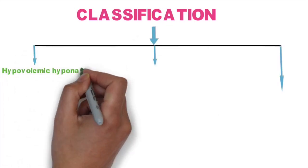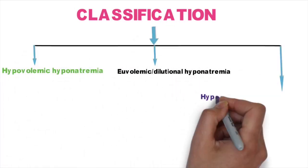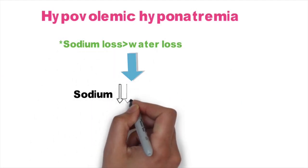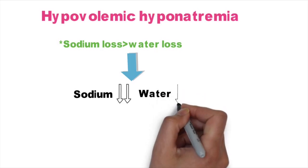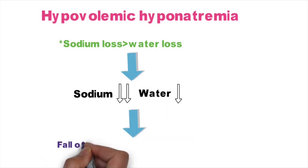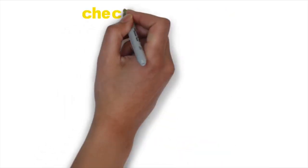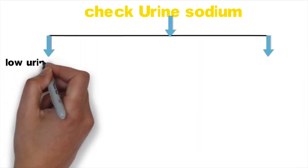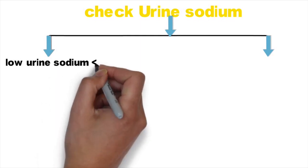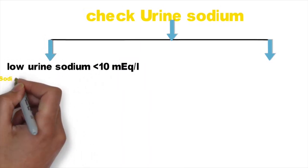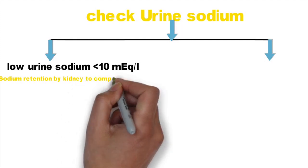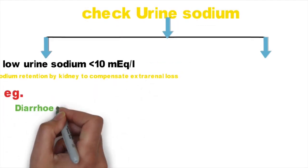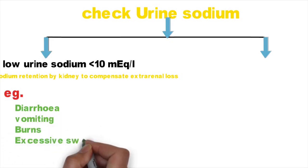Classification: Hypovolemic hyponatremia. In hypovolemic hyponatremia, both sodium and water are lost from the body, but sodium loss is more than water loss — that is, overall sodium concentration decreases in plasma. When we examine the urine of a hypovolemic hyponatremia patient, if there is less than 10 milliequivalent per liter of sodium in urine, it is due to sodium retention by the kidney to compensate extra-renal loss.